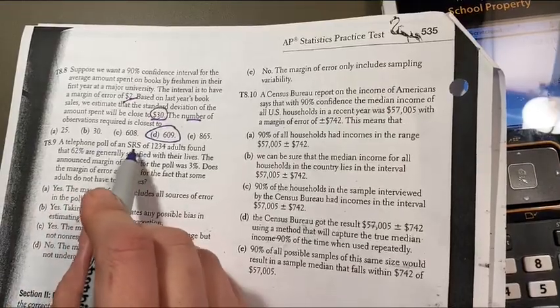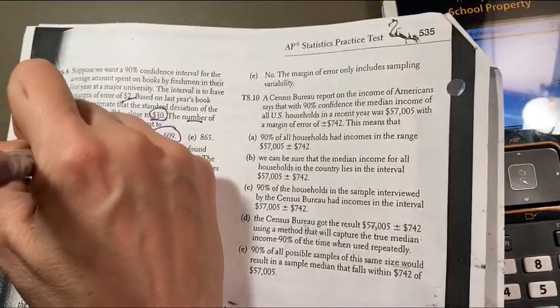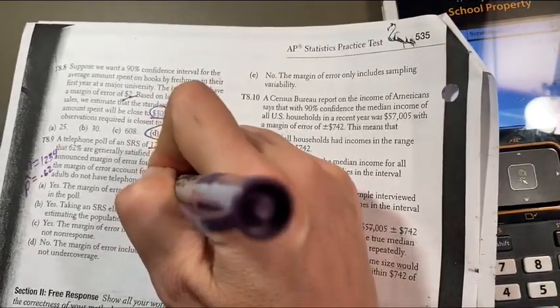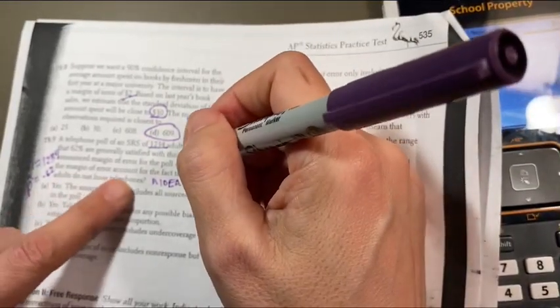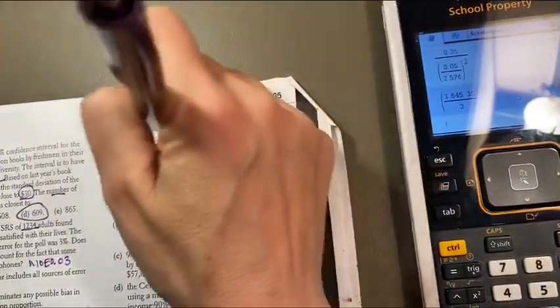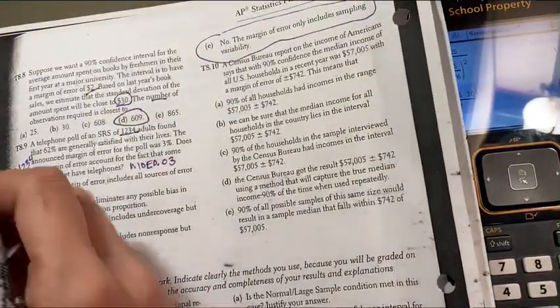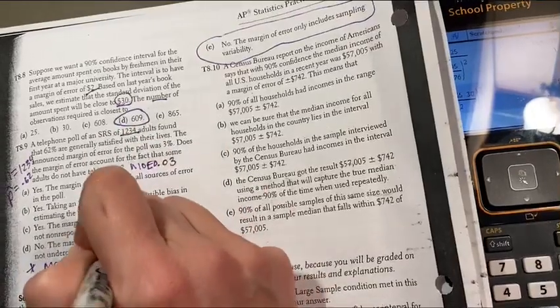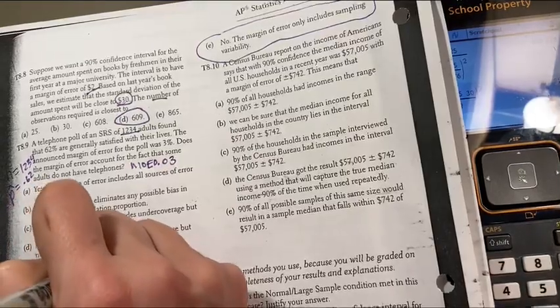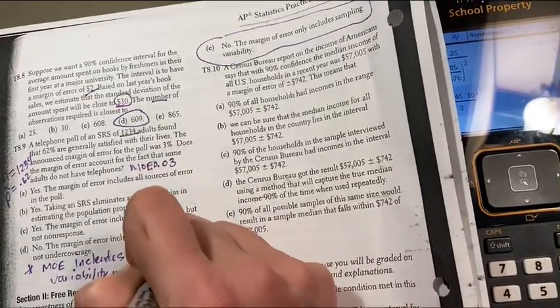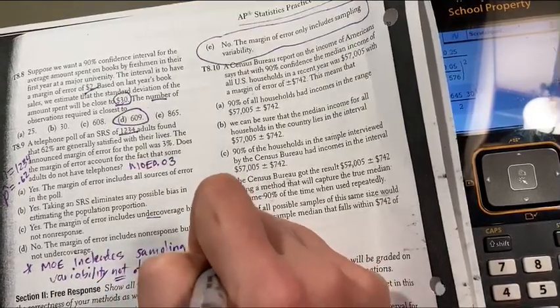8.9. Let's take a look. A telephone company, SRS, of this many adults, so N is 1234, nice number, found 62% were satisfied. So the proportion was 0.62. The announced margin of error was 0.03. Does the margin of error account for the fact that some of the adults don't have phones? No. We talked about this in class. No. The margin of error only includes sample variability. So I would suggest writing that out to help remember that concept. Margin of error includes sampling variability, not other issues with sampling, like sampling design of some sort.